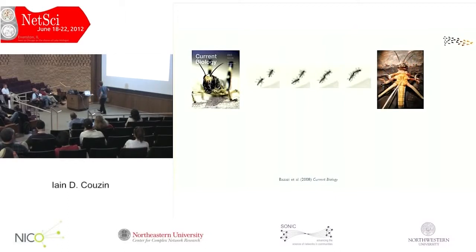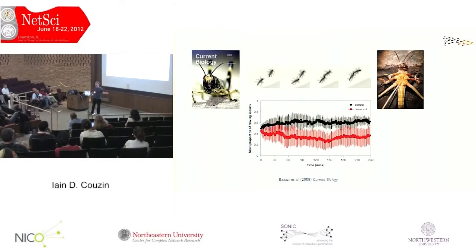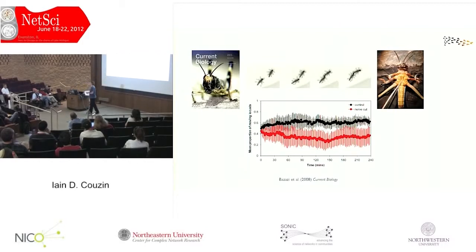With Sepidae Buzazi, an undergraduate in my lab, we cut the nerves that give locusts the sensation of biting to the abdomen. If we make swarms of these nerve-cut individuals, shown in red, they wouldn't swarm. So if the locusts can't feel the biting from behind, they don't march. They are statistically indistinguishable from insects that are not interacting at all.